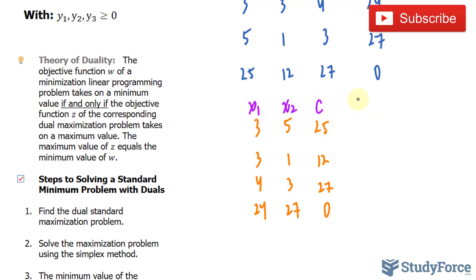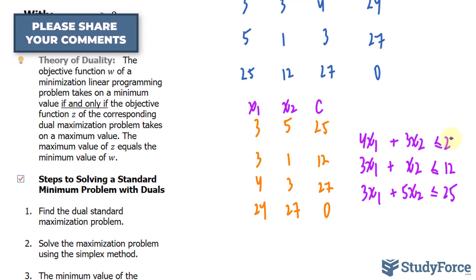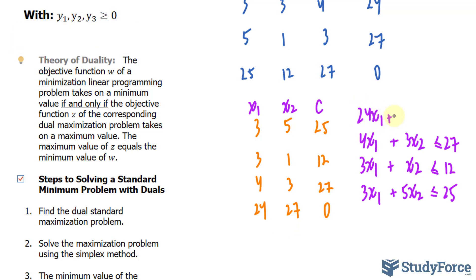So to convert this into a constraint, we'll write down 3x₁ plus 5x₂, and that needs to be less than or equal to 25. Similarly for that one, 3x₁ plus x₂ is less than or equal to 12. For our next row, 4x₁ plus 3x₂ must be less than or equal to 27. And our new objective function is 24x₁ plus 27x₂ equals z. We're no longer using w.